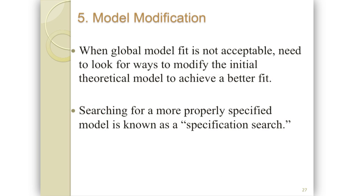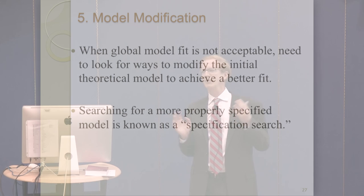The last stage is model modification. Typically the fit of your initial model is not as acceptable as you would like, so the question becomes what do we do about it. There's a set of procedures for looking at ways to modify the model to achieve better fit — we call this a specification search. We're looking for clues in the results suggesting that perhaps some relationship should be taken out of the model and a different one put in.